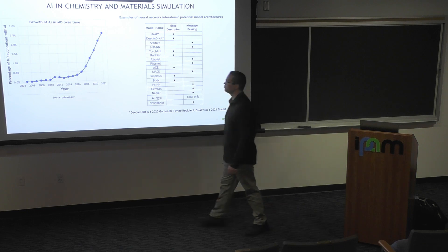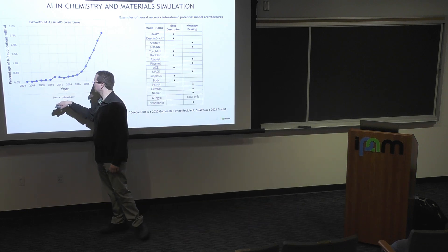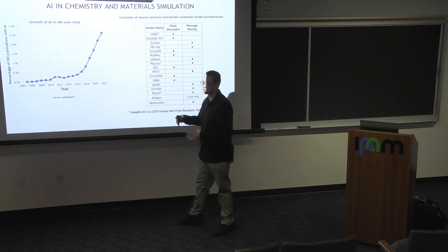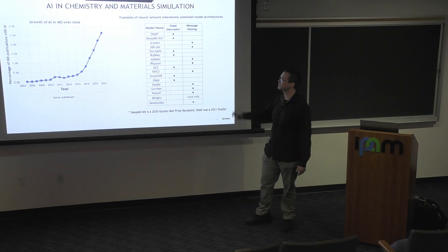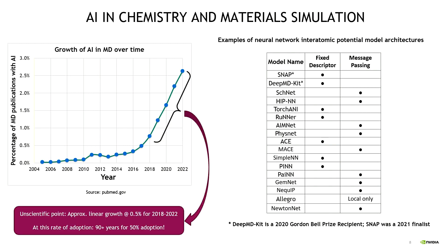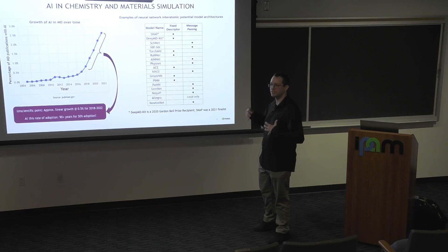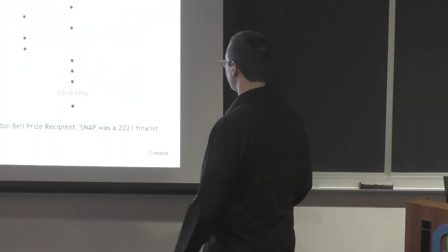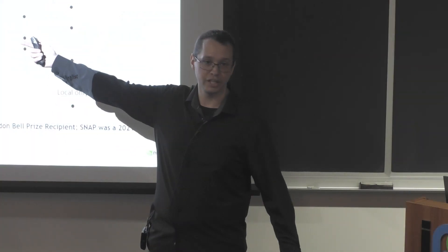I went to PubMed and searched for MD publications, then looked at how many are actually using active AI. It turns out that from about 2014 to 2018, things started to really accelerate, but after that it's kind of stagnated — growing at about one percent per year. If you extrapolate, in about 90 years we'll have 50% of the market. Totally not scientific, but it's a neat thing to think about: what is the holdup? Is there some reason these methods are not being adopted more in molecular dynamics simulations?